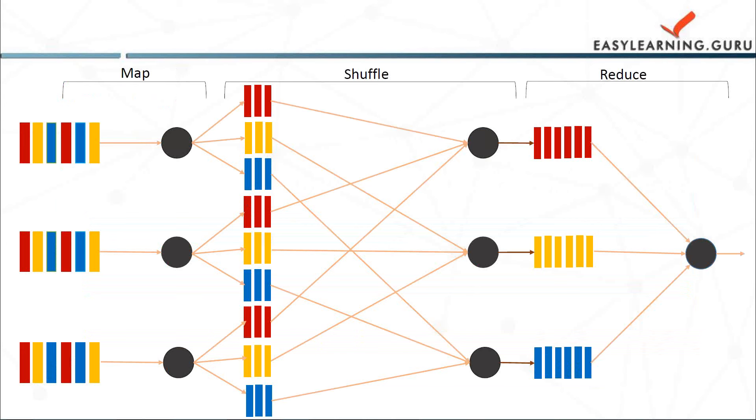Then we have the shuffle step. Worker nodes redistribute the data based on output keys such that all the data belonging to one key is located on the same worker or data node.